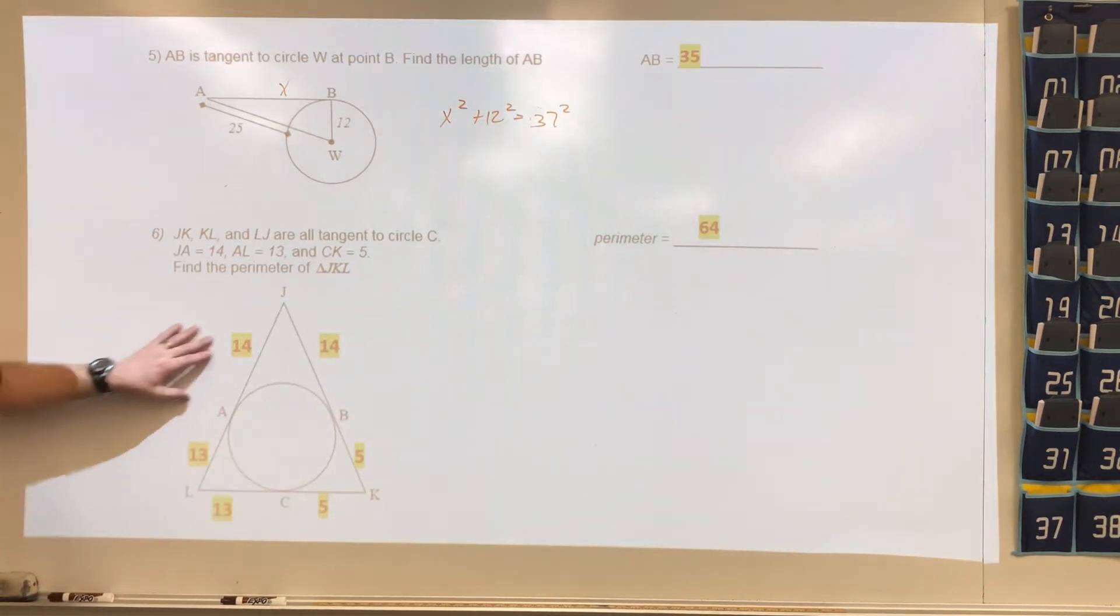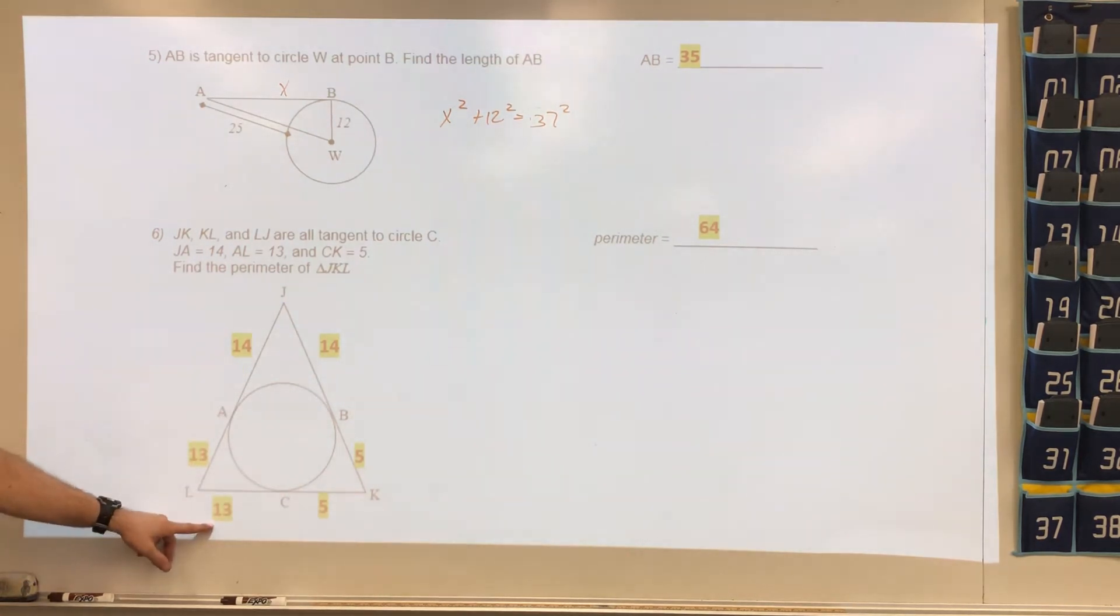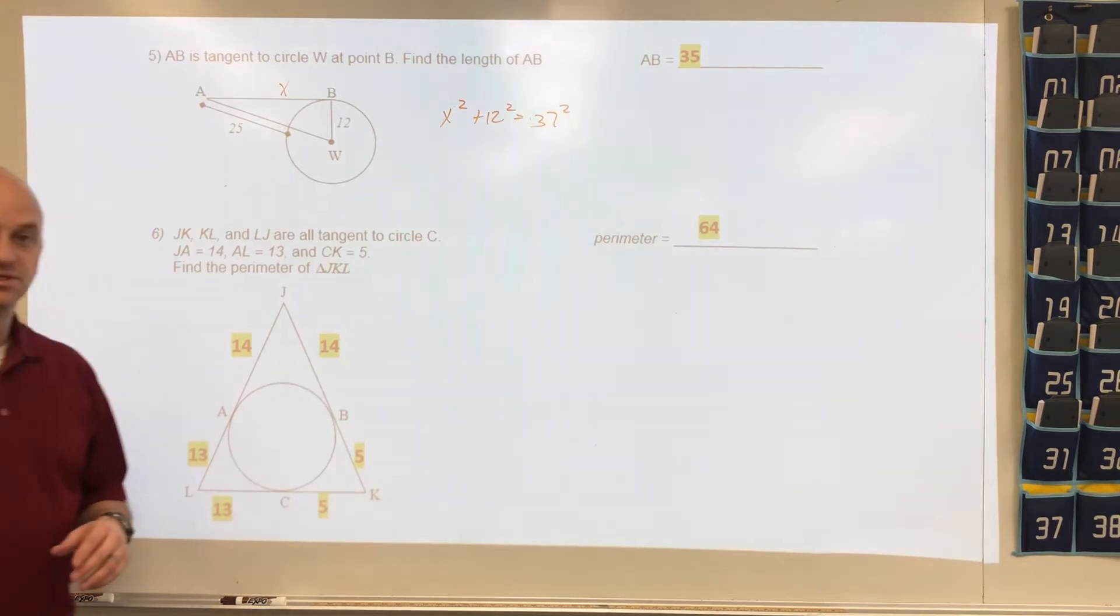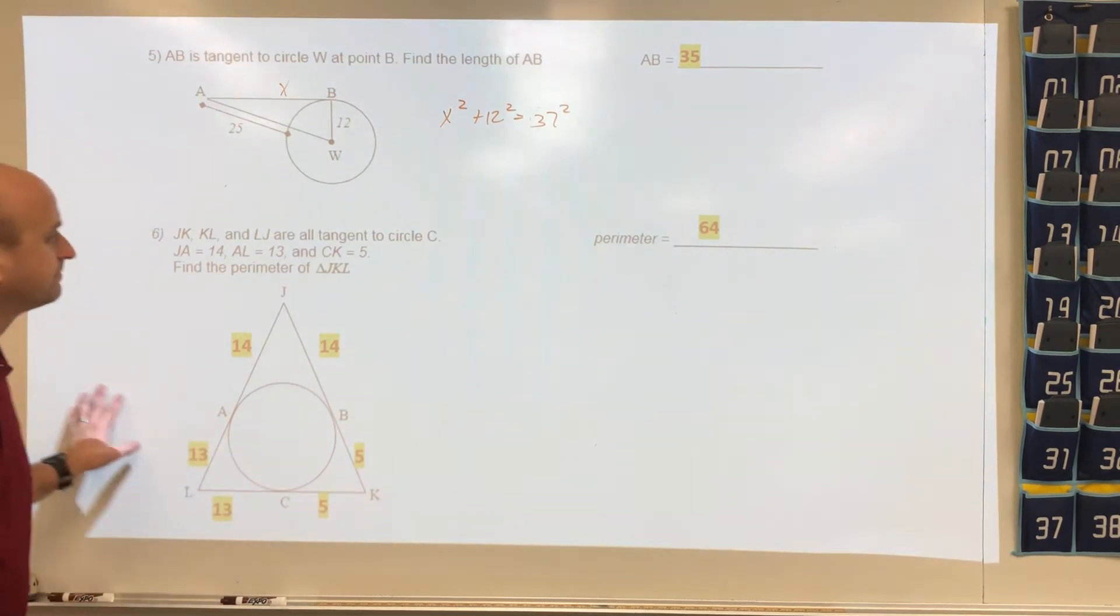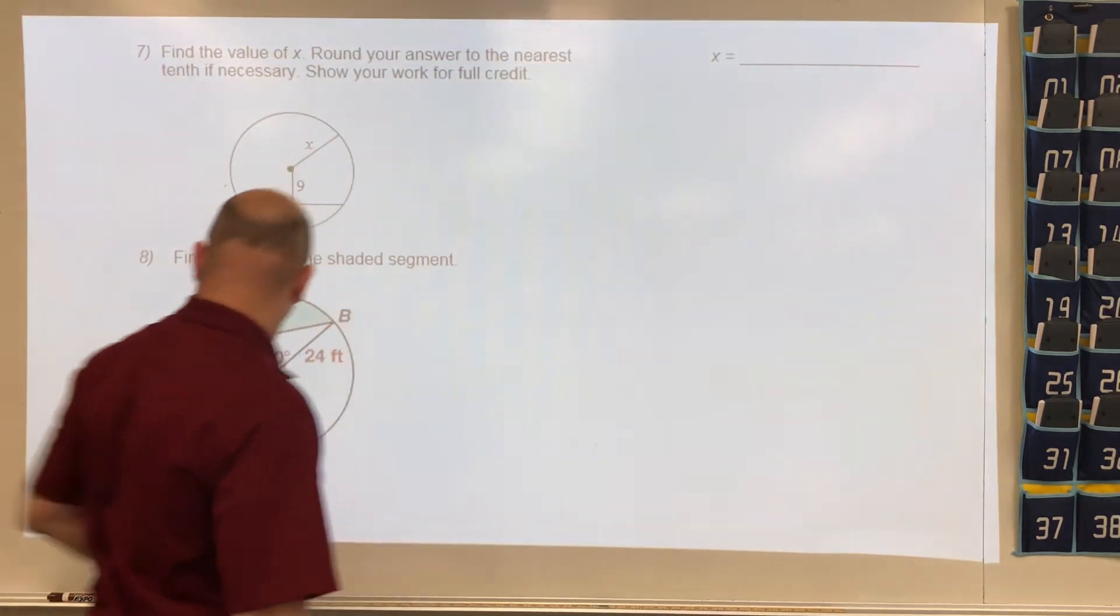When you plug these in, this value here, 14 was given, so this is going to be 14. 13 was given, so this is going to be 13. 5 is given, so this is going to be 5 here. Now we add up these values and we get a perimeter of 64.